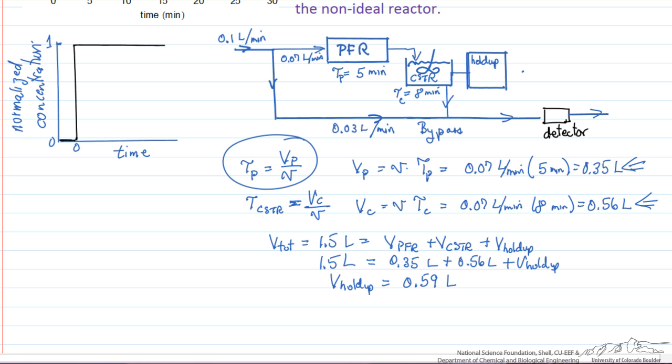The diagram here certainly is not to scale in terms of the size of the reactors. The largest volume is the holdup, the next largest is the CSTR, and the smallest is the plug flow. But this then would give us a response to the step function input that we measure.